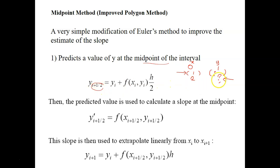This is what we call y at the midpoint of the interval, which is i plus half. So y_(i+1/2) = y_i plus the slope times h over 2. The step size is divided by 2. Now that we have obtained our y_(i+1/2), the predicted value is used to calculate a slope at the midpoint. We use the midpoint x_(i+1/2) and y_(i+1/2) to calculate the slope at the midpoint.